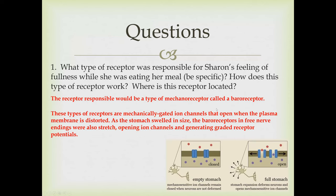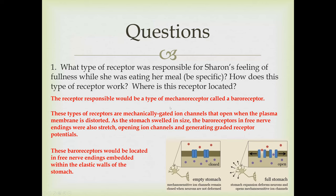How does this type of receptor work? These types of receptors are mechanically gated ion channels that open when the plasma membrane is distorted. As the stomach swelled in size, the baroreceptors embedded in free nerve endings would also be stretched as the plasma membrane stretched. This would open ion channels and generate a graded receptor potential, and then if that graded receptor potential reached threshold, you would get an action potential. These baroreceptors are located in free nerve endings embedded within the elastic walls of the stomach.